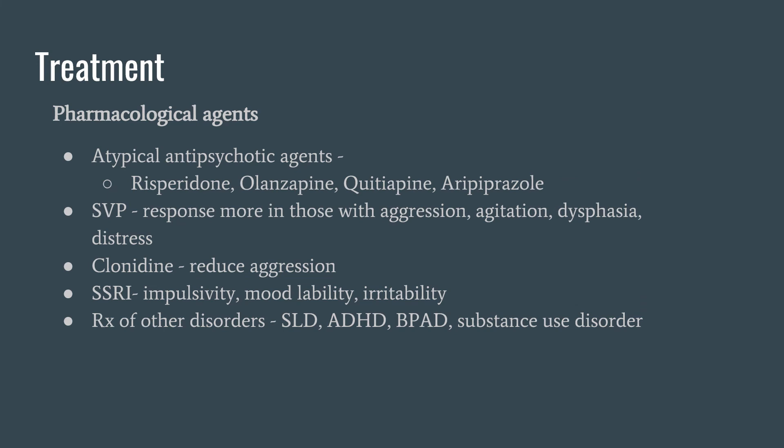For pharmacological agents: atypical antipsychotics can be used — commonly risperidone, olanzapine, aripiprazole, and quetiapine. Sodium valproate is found to show good response in both aggression and agitation. Lithium also reduces aggression. Selective serotonin reuptake inhibitors are used when a patient exhibits symptoms of impulsivity, irritability, and mood vulnerability. Treatment of other comorbid disorders such as ADHD, spectrum disorder, bipolar disorder, mood disorder, and substance abuse disorder should also be done.